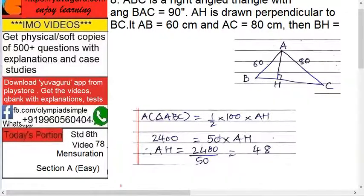So, AH equals to 2400 by 50, that is 48. Now, you got AH. Now, you have to find BH.